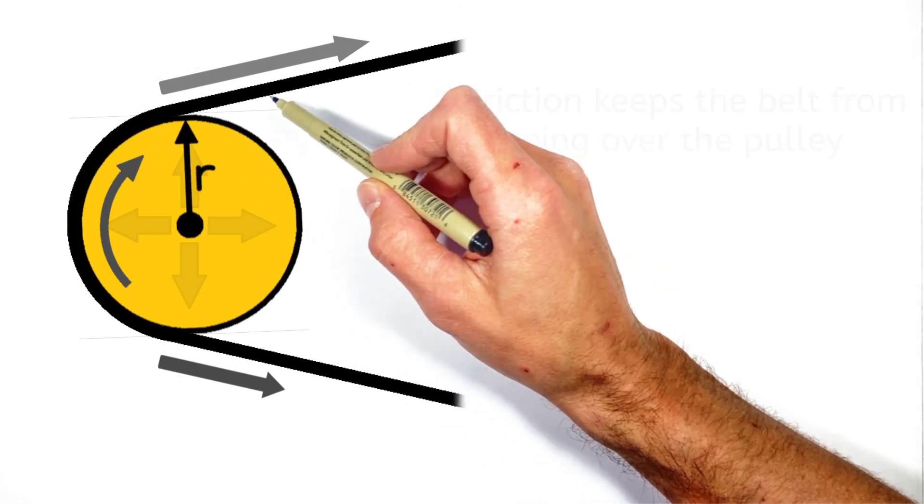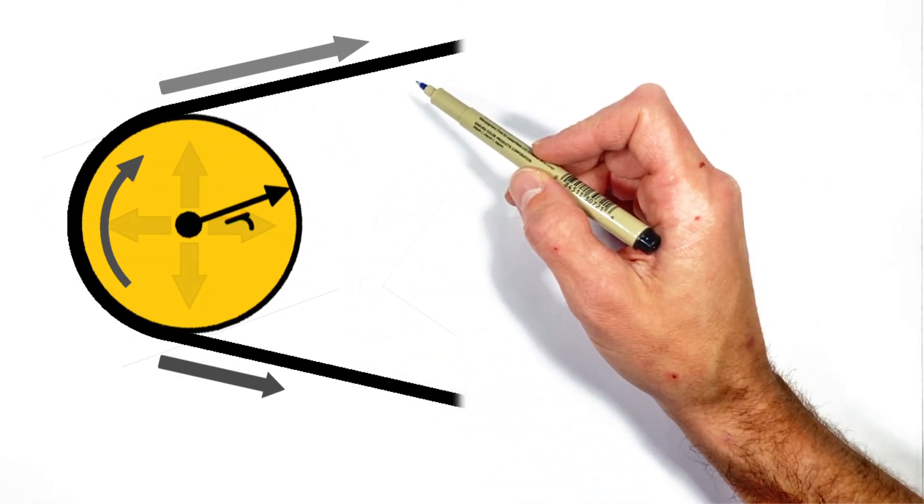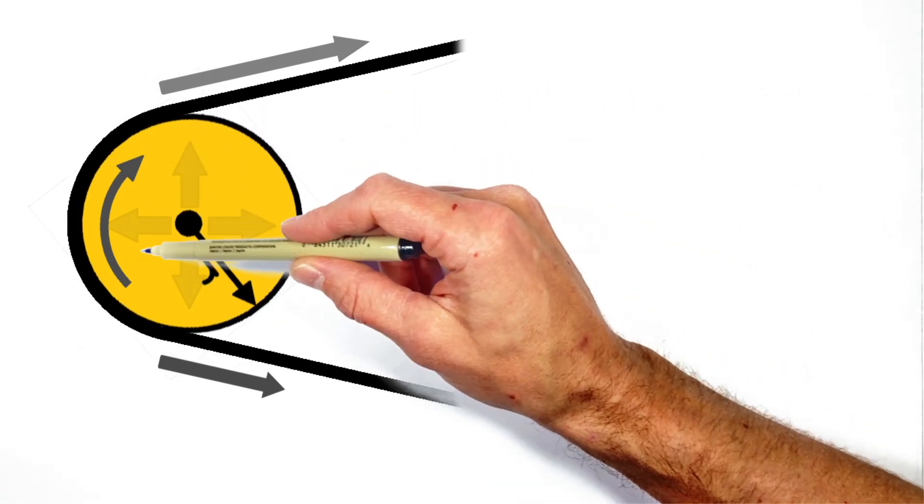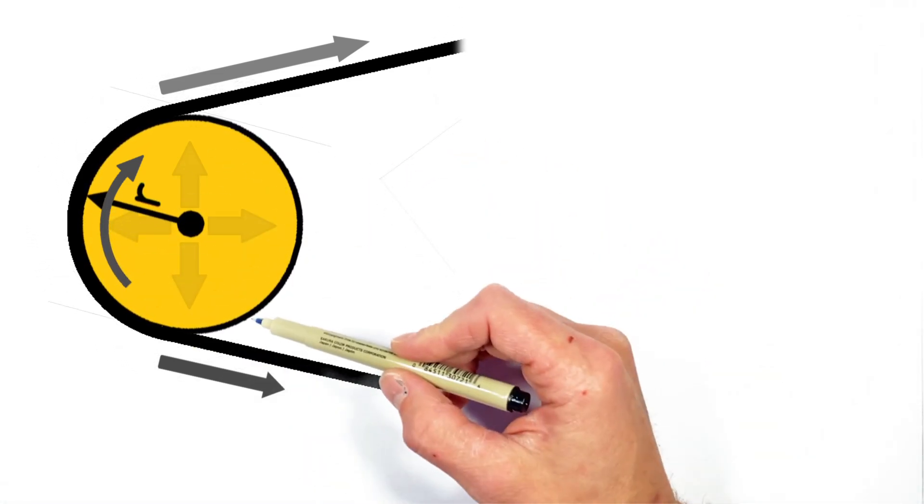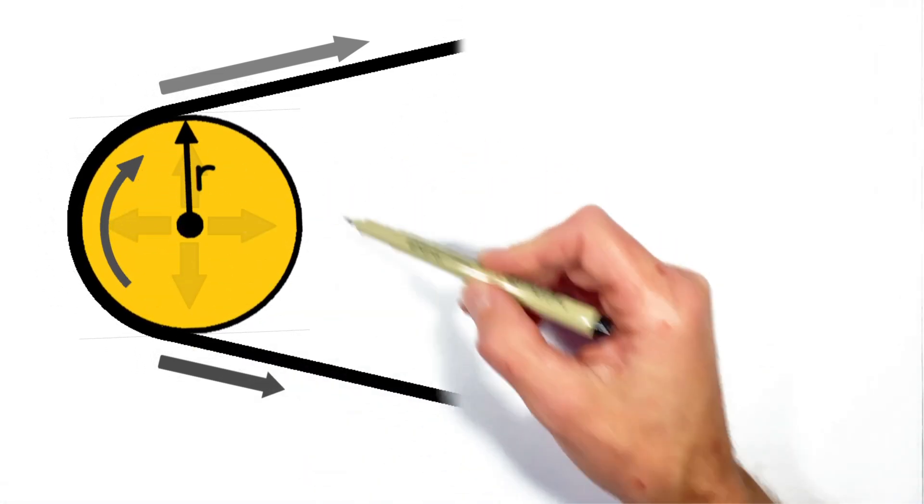So if this part of the belt pulls this way to the right, then the friction between the belt and the pulley is going to twist the entire pulley, or put a torque on the pulley, clockwise.